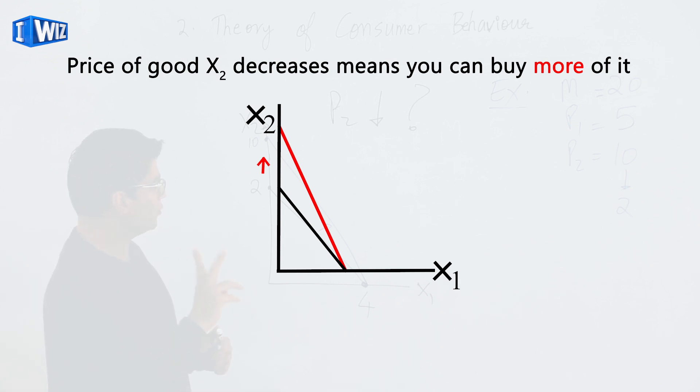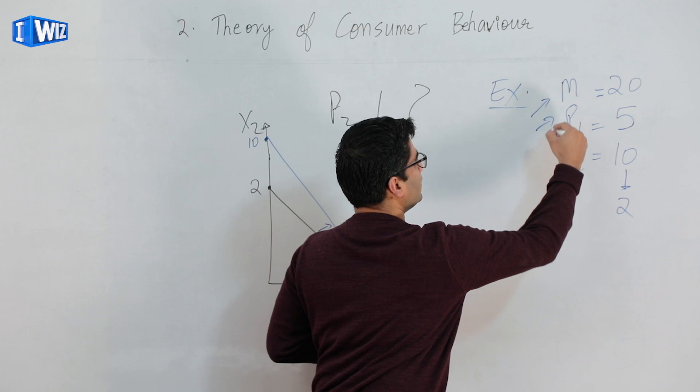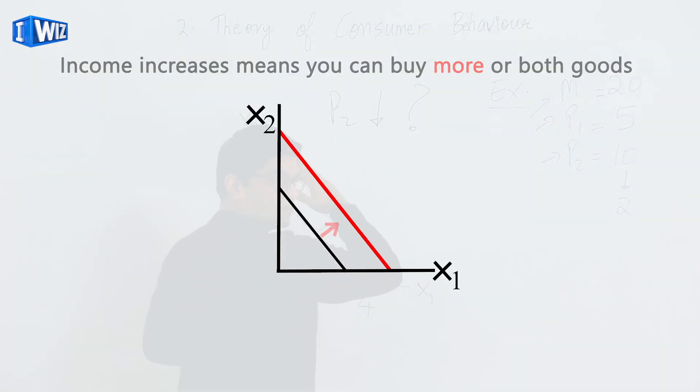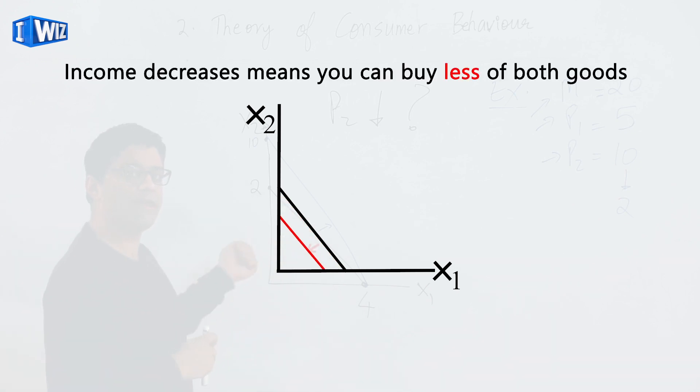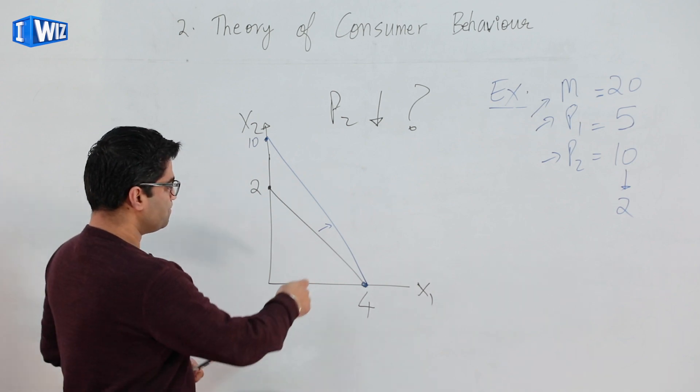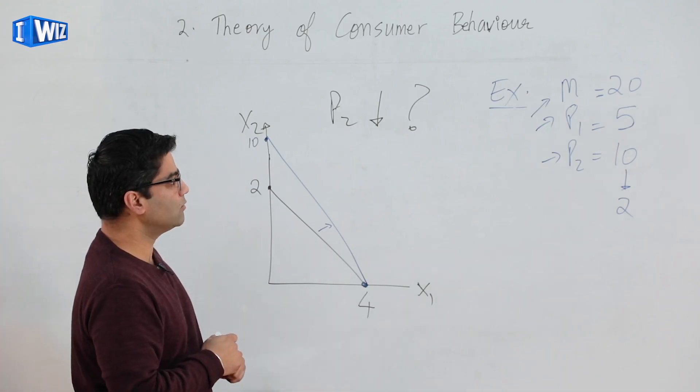In summary, when looking at these three variables, if income goes up the line moves outward in a parallel fashion. If income goes down, the line moves left in a parallel fashion. If price of good one goes up, this line pivots inward like we did last time. And if price of one goes down, this line pivots outward on the x-axis.